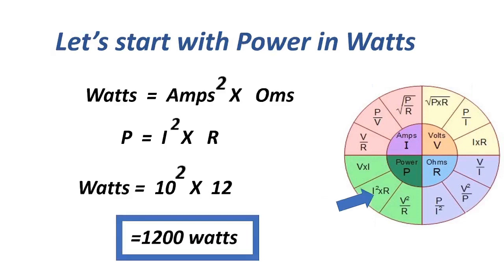The next formula for power: watts equals amps squared times ohms, or P equals I squared times R. That equals 10 squared, or 100, times 12. Our answer is 1,200 watts.